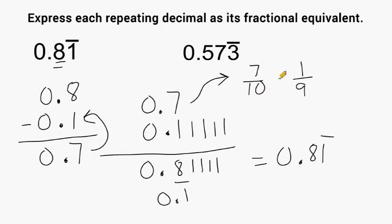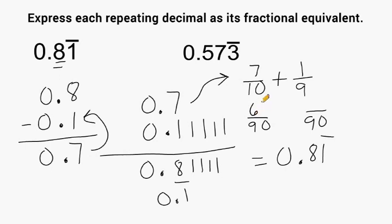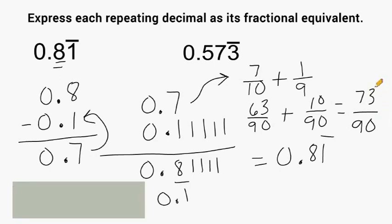Now we have to add these two fractions together to find the fractional value representing 0.8 repeating one. We need a common denominator, and the lowest common denominator of 10 and 9 is 90. Ten fits into 90 nine times, so we multiply the 7 by 9 which gives us 63 over 90. Nine got 10 times bigger so we make this one 10 times bigger, giving us 10 over 90. Adding the numerators gives us 73, and 73 over 90 cannot be reduced, so this is our answer.